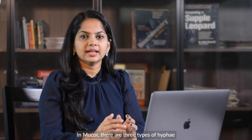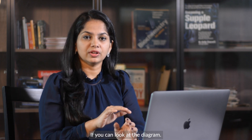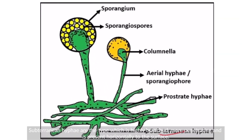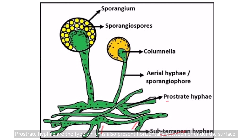In mucor, there are three types of hyphae. If you look at the diagram: subterranean hyphae are highly branched, more penetrating but horizontal to the surface. Prostrate hyphae are also present horizontally but they are between or under the surface. These two hyphae — subterranean and prostrate — help in absorption of water and nutrition.